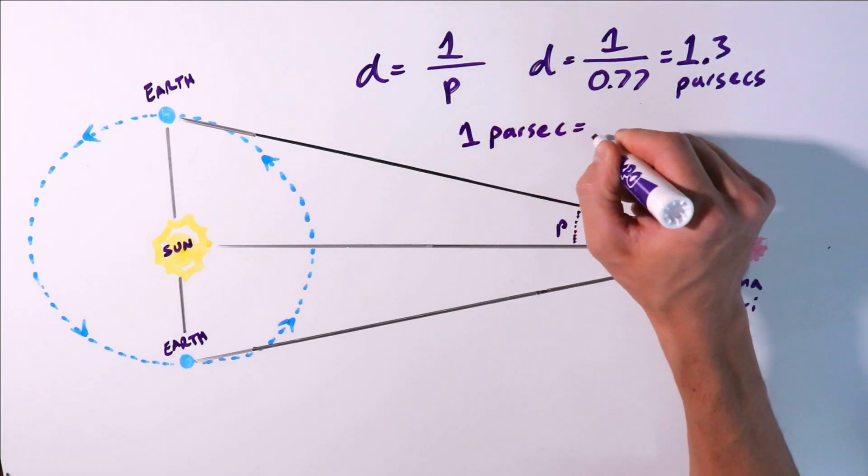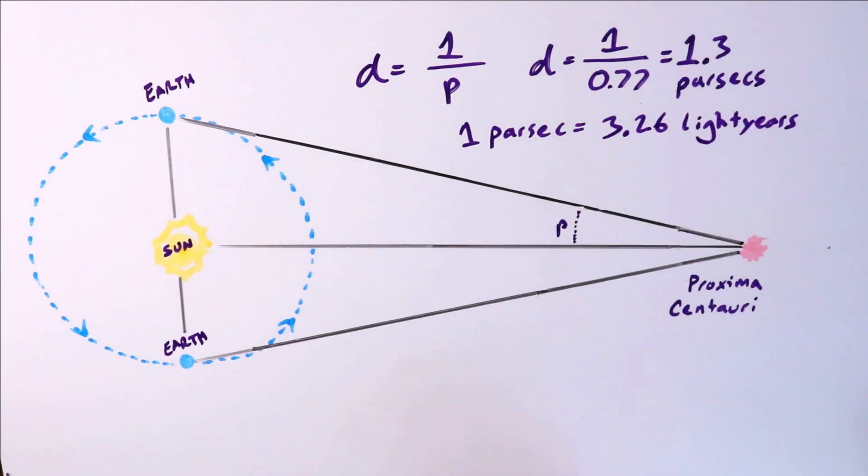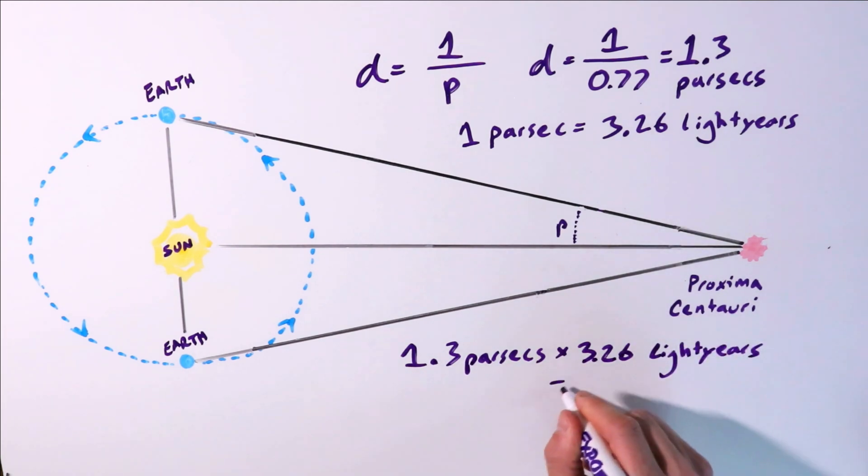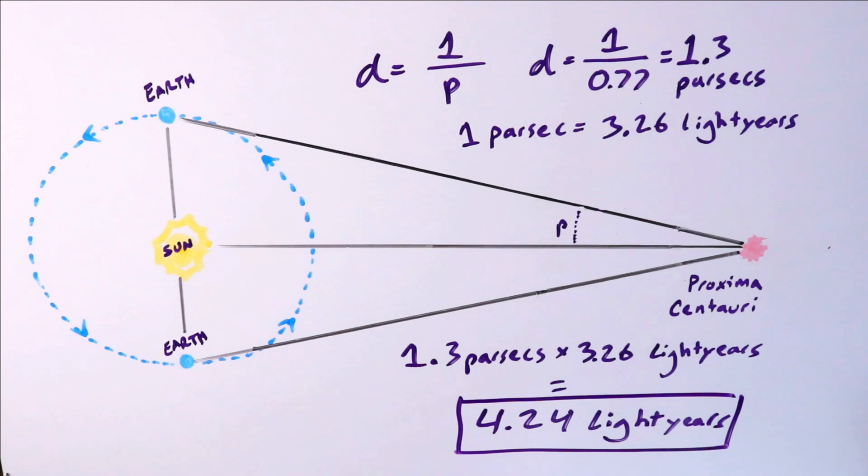Since there's 3.26 light-years in a parsec, just multiply your parsecs by light-years. 1.3 parsecs times 3.26 light-years per parsec equals 4.24 light-years. So that's how you would use the parallax formula to calculate the distance between Earth and Proxima Centauri.